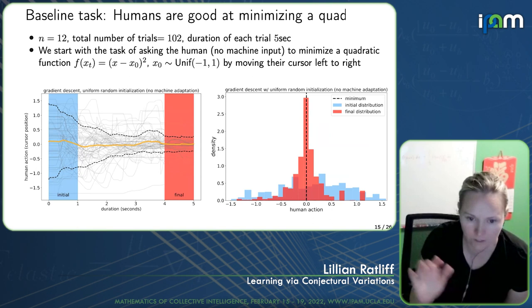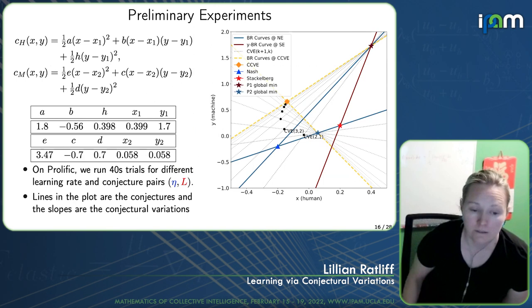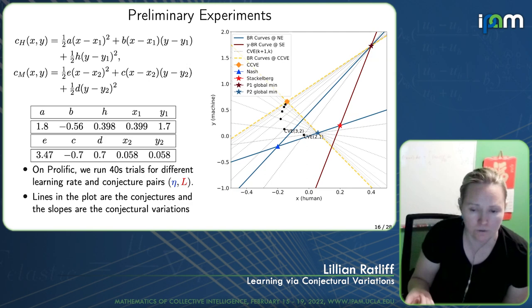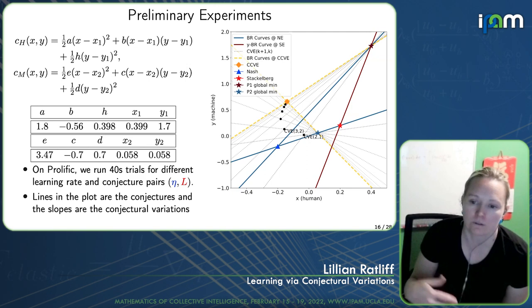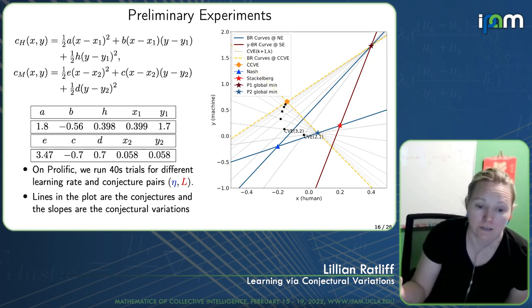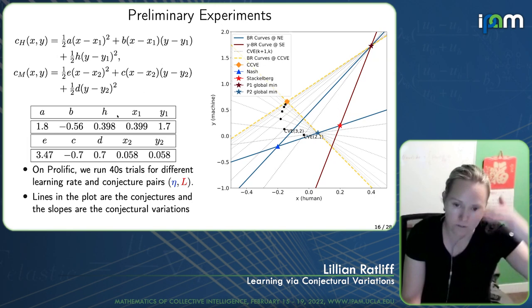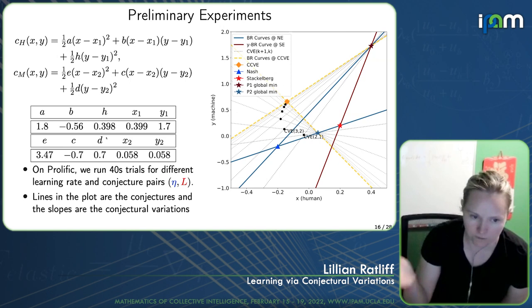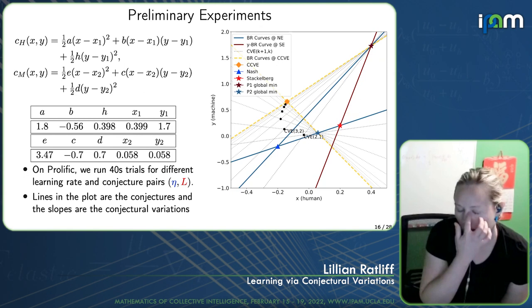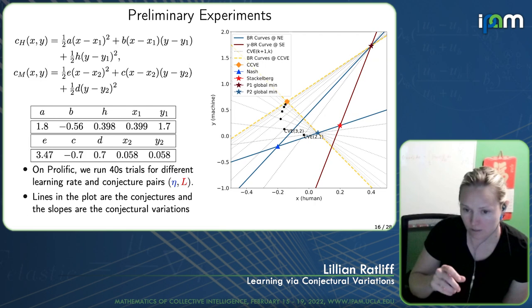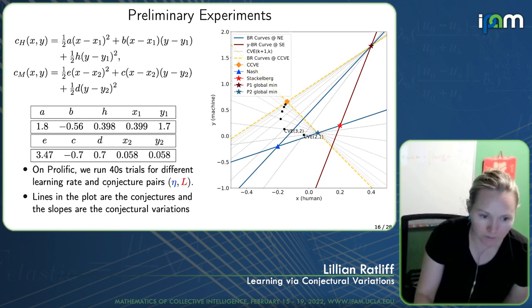In our experiments, we vary the step size eta for the machine and the conjecture to see which equilibrium humans converge to. This leads to a predictive model for how the human will respond given whatever conjecture and step size the algorithm we control is using. We use quadratic costs as prescribed — shown at the top of the slide — for what's displayed to the human and as the machine's internal cost. We collect data on Prolific, a research version of Mechanical Turk that crowdsources participants. Players play 40-second trials and we collect data to see what behaviors they execute.